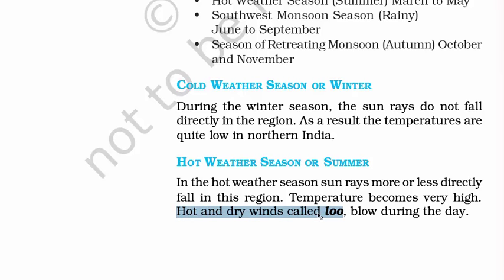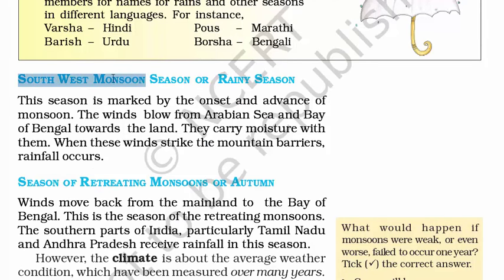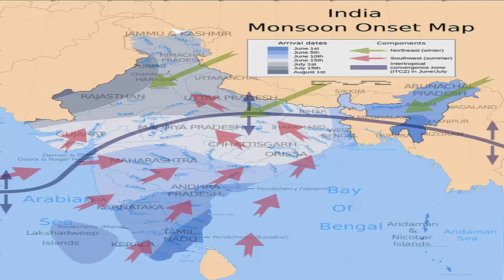If there is a question, hot and dry winds are called 'loo'. In India there is a lot of loo during the summer season. Moving to page 2, the southwest monsoon season, or rainy season, is marked by the onset and advance of monsoon. The winds blow from the Arabian Sea and the Bay of Bengal. Kerala is the first state in our country to witness monsoon.